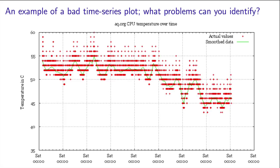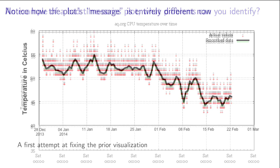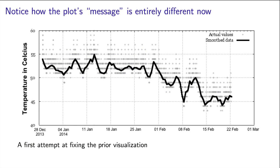Always ask yourself with any plot: what is its intention? My best guess for this plot is that it's monitoring CPU temperature. And when monitoring something, we not only want to track the trend, but also the variability. Here's a redrawn version of the same plot — I've not changed anything, I've only shifted the colors around. Now the noise becomes apparent and the main trend stands out. The message of the plot is quite different to the prior version. This idea of changing a plot's message can be done with any type of plot, not just a time series plot.